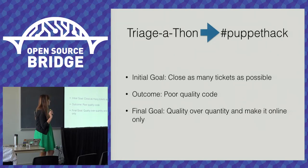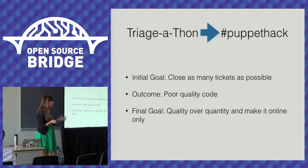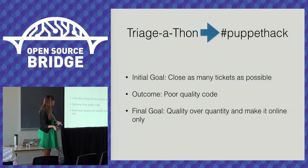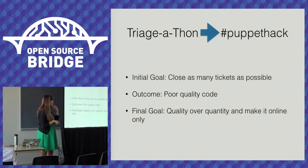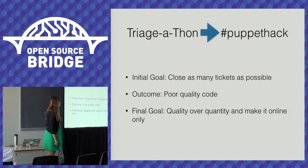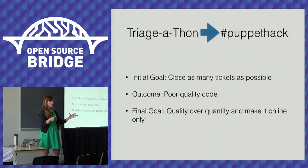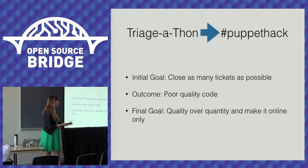We decided to move it solely online to eliminate wasted resources. We set expectations around it being for intermediate to advanced users and made a sheet for beginners listing ways they can contribute. We changed the name from Triageathon to Pound Puppet Hack to focus on it being a hack day. We also shifted the raffles from rewarding quantity of closed tickets to simply rewarding participation — every hour we pulled a name out of IRC and gave them an Amazon gift card.